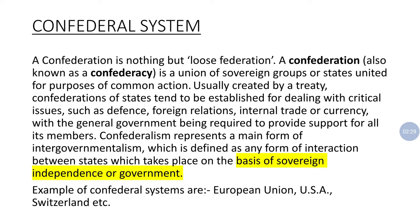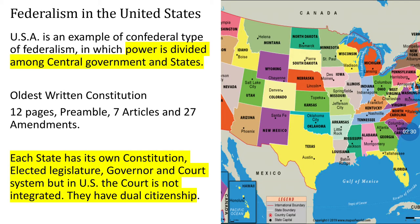Examples of confederal systems are the European Union, USA, and Switzerland. In this video we are going to study the confederal system in the USA, and we will also take the example of the European Union to understand the confederal system in a much better way.